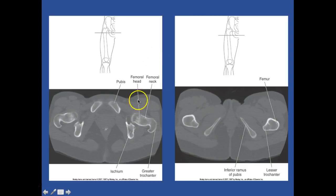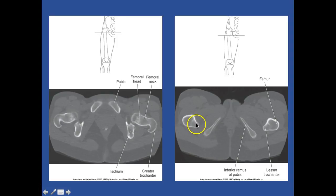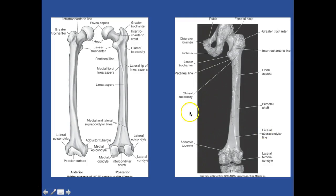You have the pubis, the head of the femur, the neck of the femur, the greater trochanter, and the ischium. As you can see, we're lower, and you can see your lesser trochanters, which tells you that this is the inferior ramus of the pubis. So here's your femur and your lesser trochanter.